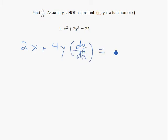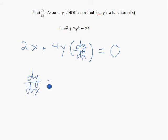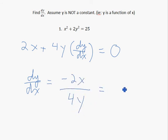On the right hand side you get 0. And when you solve that down, you get dy/dx is negative 2x over 4y, which simplifies to negative x over 2y.